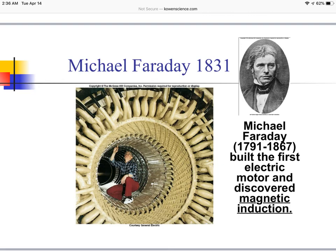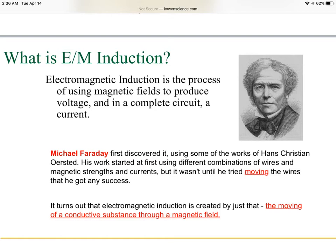Michael Faraday is the second individual that came up with relationships between magnetism and electricity. He built the first electrical motor and discovered magnetic induction. Faraday first discovered electromagnetic induction by using some of Ørsted's work, then tried different combinations of wires, magnetic strengths, and currents. But it wasn't until he tried moving the wires that he got any kind of success.